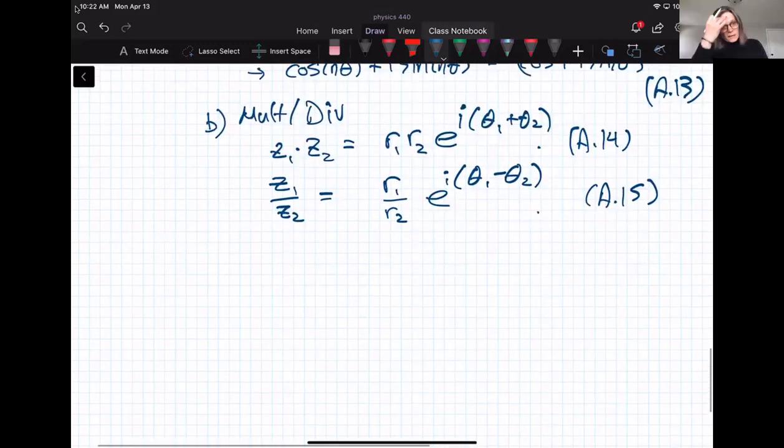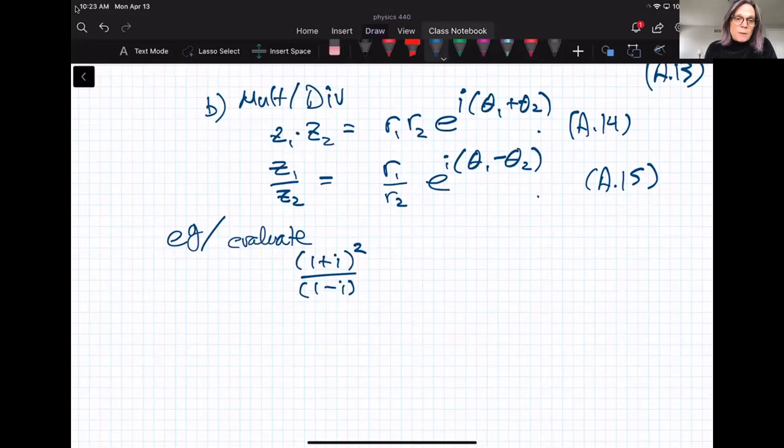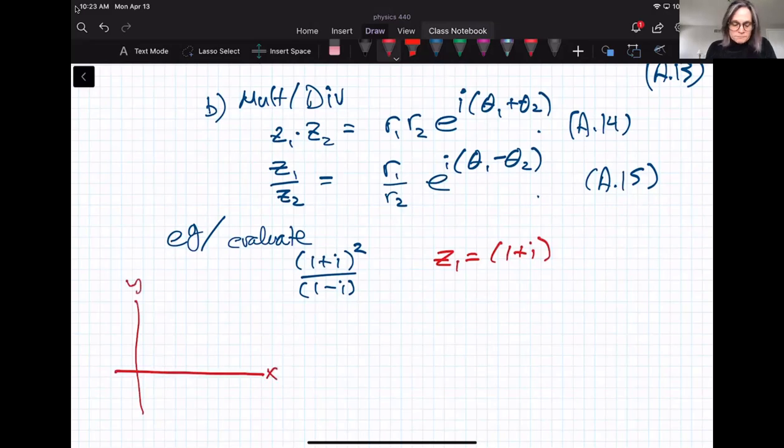Okay, so what does that get us? It gets us something interesting graphically. So if we, for example, want to evaluate, and again, I apologize if these are toy problems, but I think on Monday toy problems are fine. If we want to evaluate 1 plus i squared over 1 minus i, right? We have the tools to do this, right? If we multiply top and bottom by complex conjugate of the denominator and so on, we can consider z1 is equal to 1 plus i. And what does that look like in our complex plane graph? 1 comma 1. Right, so in particular, we have an angle of 45 degrees and a length of root 2.